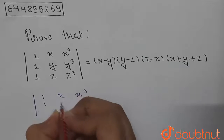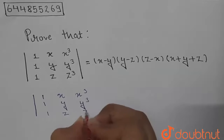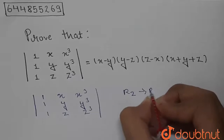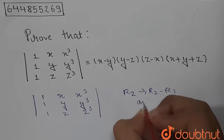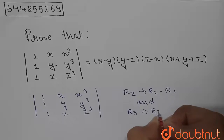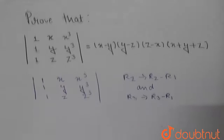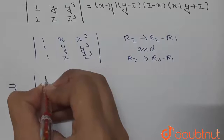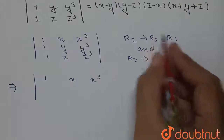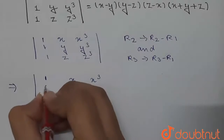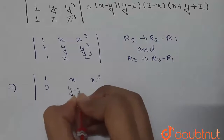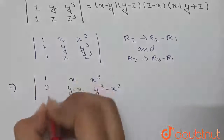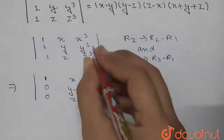Now we are going to apply some row operations: R2 tends to R2 minus R1, and R3 tends to R3 minus R1. So row 1 remains as (1, x, x³). Row 2 becomes (0, y minus x, y³ minus x³). Row 3 becomes (0, z minus x, z³ minus x³).